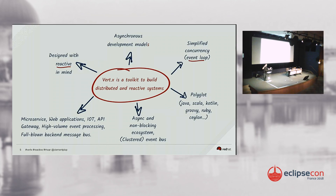Vert.x provides several asynchronous development models and these are not limited to Java, because we all have different backgrounds. There may be JavaScript, Scala, Kotlin, or Groovy users here. Vert.x provides APIs for all these languages using the constructs of each language. For Scala, use Scala features because they are great. For Kotlin, go for coroutines — they are really the next level of concurrency constructs we'll be using in Java in five or ten years. Concurrency is simplified using an event loop because you are always executed by the same thread, so you don't need synchronized anymore — you can't have concurrent accesses with a single thread.